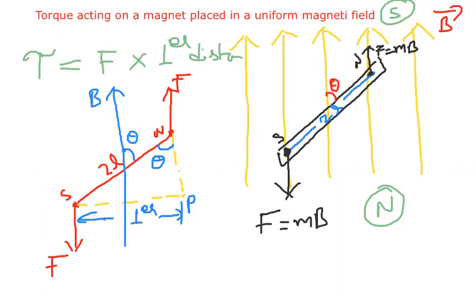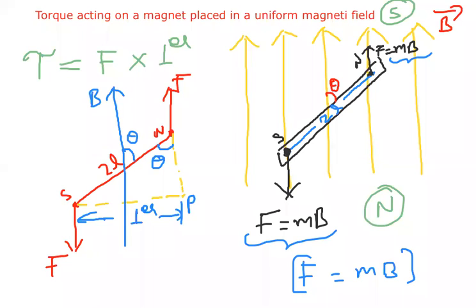Torque equals force into perpendicular distance. The force F equals mB. SP is the perpendicular distance for both force directions. Now from the triangle, sine theta equals opposite over hypotenuse — opposite is the perpendicular SP, and hypotenuse is 2L. So sine theta equals perpendicular divided by 2L.